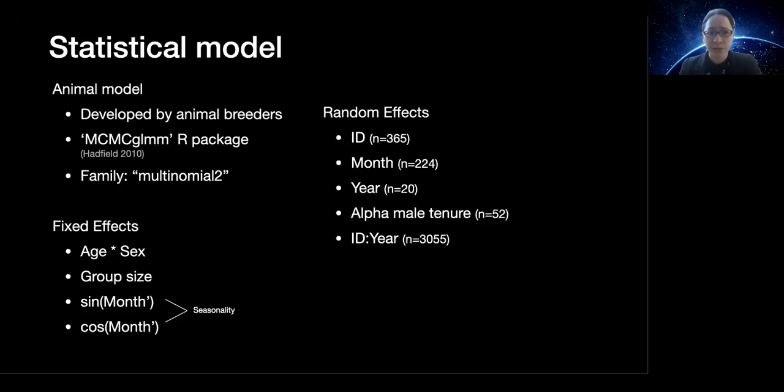As random effects, we included subject ID to avoid pseudo replication, but also because we wanted to look at repeatability. We included month of data collection, year of data collection, and a group term representing different alpha male tenures. We also included an ID within year term to look at short term repeatability within a year. In order to partition maternal effects, we included the identity of subjects' mothers. We also included an additive genetic variance component.